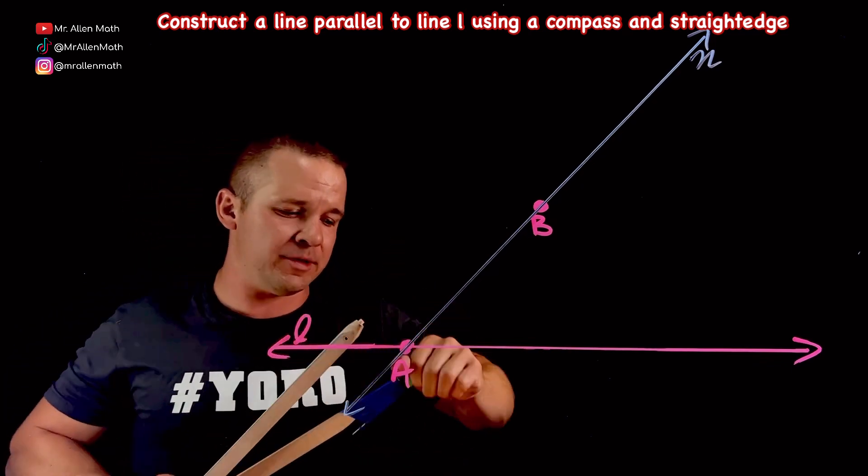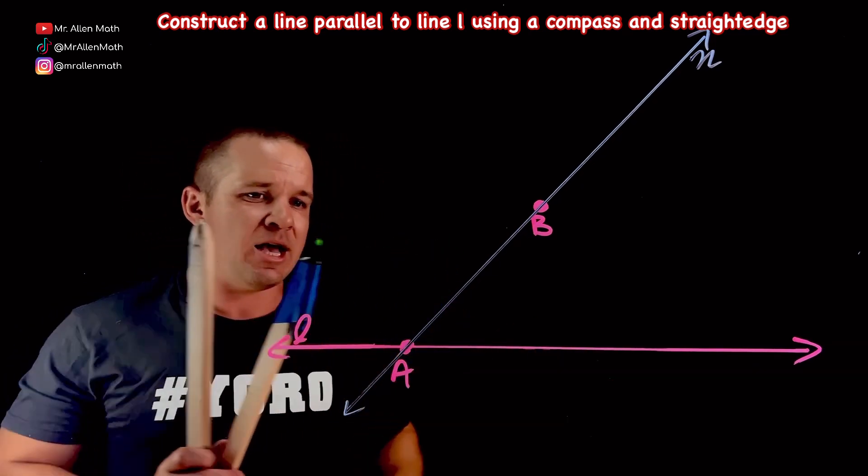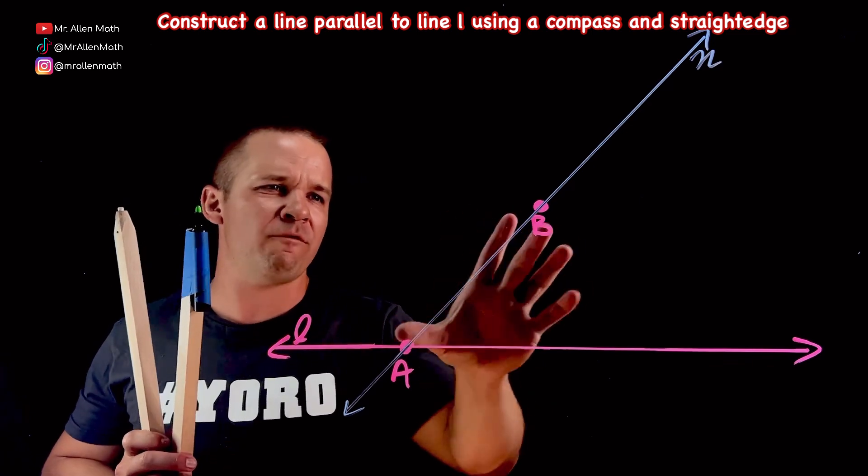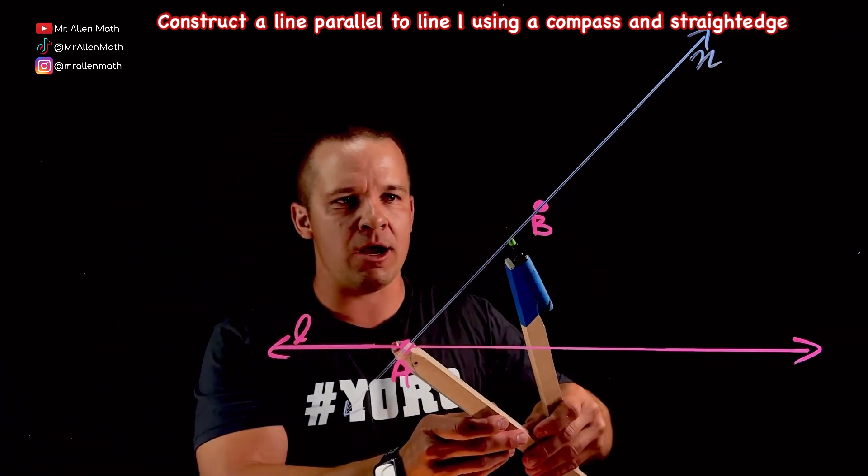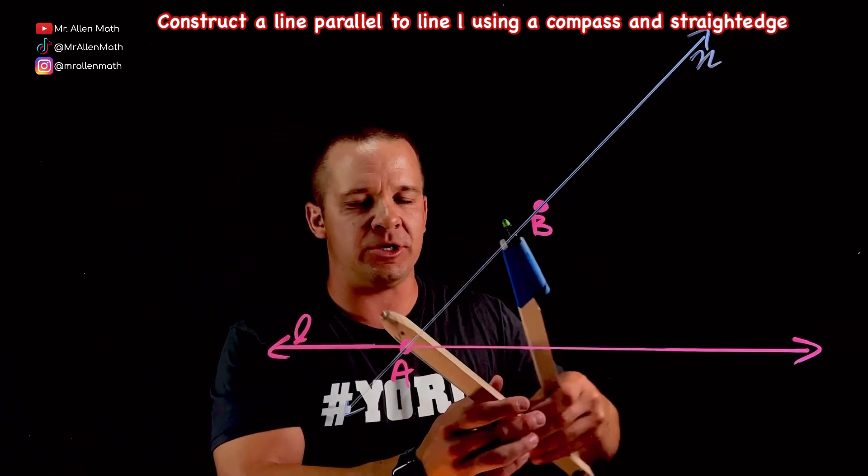Now, the next thing is I'm going to take my compass, loosen it up. I'm going to set it a distance that is less than A to B. I'll put my point A in here, and I'll do something like around that'll be just fine.